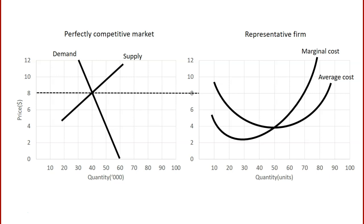Whether this firm produces 20, 50, or 70 units of output, the price will remain at $8. That means the firm's average revenue — its revenue per unit — will be identical to its marginal revenue, that is its revenue for each additional unit produced, and both will be set by the market price. So we have a horizontal marginal and average revenue curve.